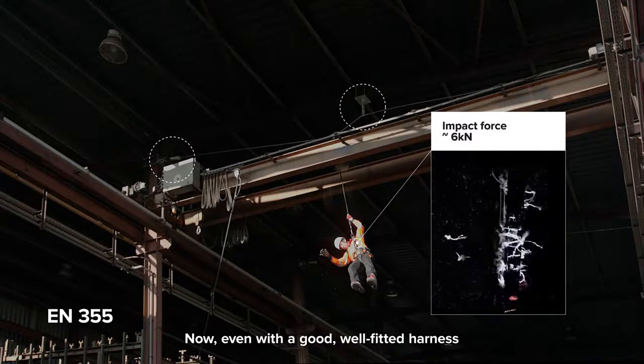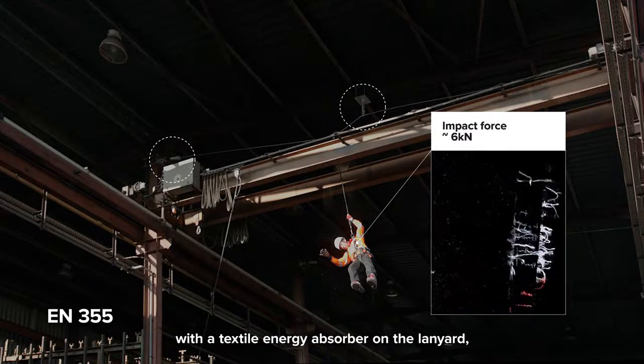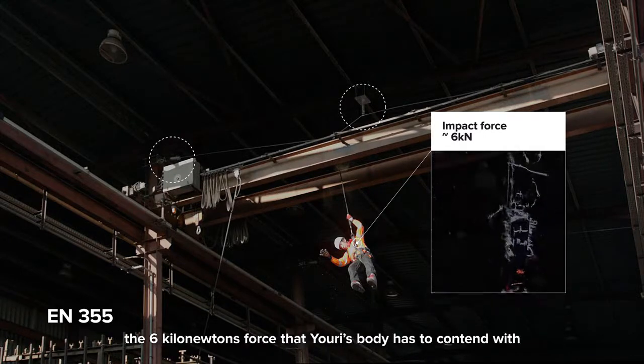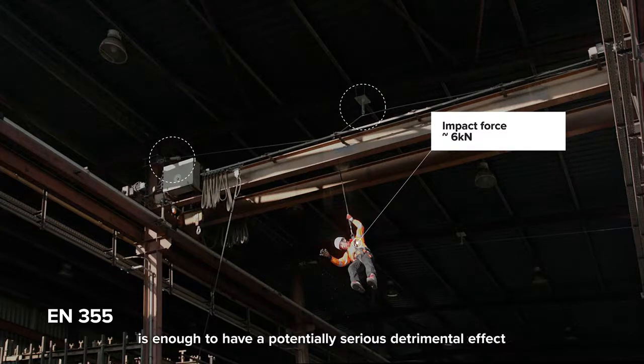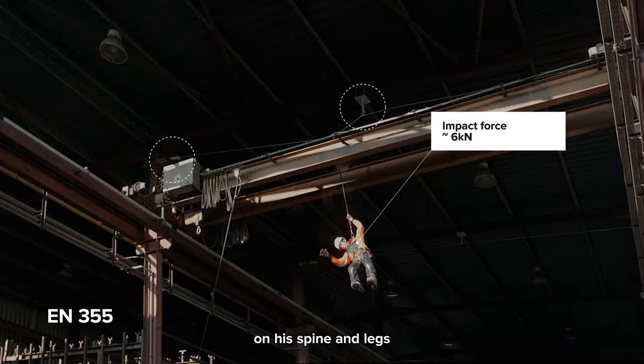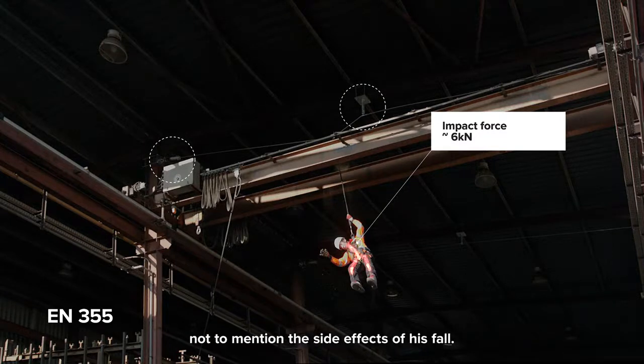Now, even with a good, well-fitted harness with a textile energy absorber on the lanyard, the 6 kilonewtons force that Yuri's body has to contend with is enough to have a potentially serious detrimental effect on his spine and legs, not to mention the side effects of his fall.